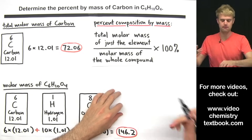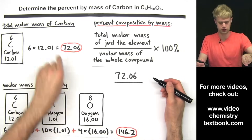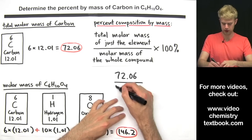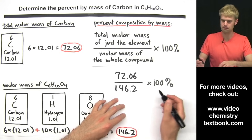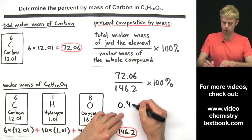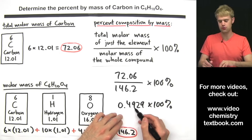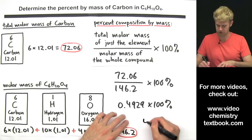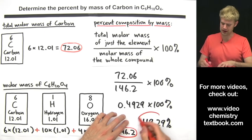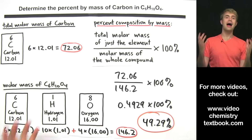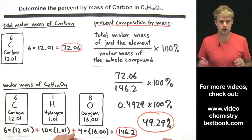Plugging into the formula: 72.06 on top divided by 146.2 on the bottom, times 100%. The first step gives 0.4929. Moving the decimal two spots to the right and converting to a percentage gives 49.29% — the percent by mass of carbon in C₆H₁₀O₄. That is how to calculate percent composition by mass, also known as percent by mass.